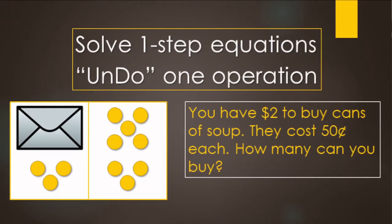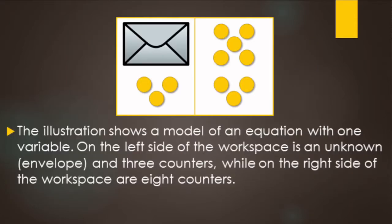An example: you have $2 in your pocket. You go into the store to buy some cans of soup. Each of them costs 50 cents. How many can you buy? Now, if you're visual, you might look at something like this.